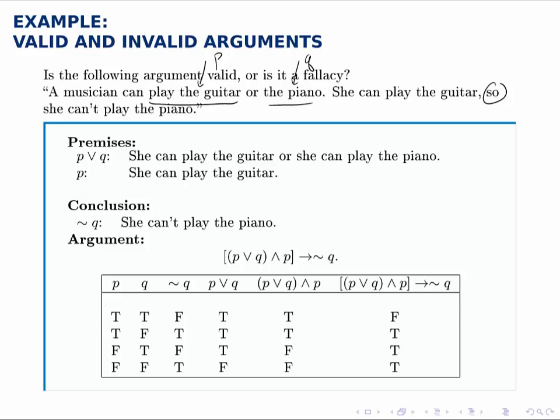The second premise is that she can play the guitar, so that's P. And the conclusion is therefore she can't play the piano, or not Q.